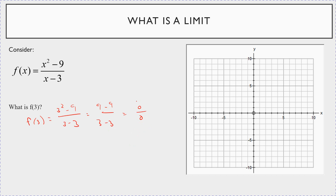You'll notice in calculus — and you'll hear me talk about this a lot in the coming weeks — whenever you have 0 divided by 0, this is what's called indeterminate form.